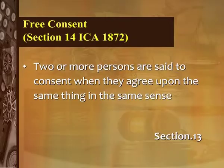The basis of a contract is agreement, that is mutual consent. In other words, the parties should mean the same thing in the same sense and agree voluntarily. Free consent is one of the essential elements of a valid contract. According to Section 13 of the act, two or more persons are said to consent when they agree upon the same thing in the same sense.